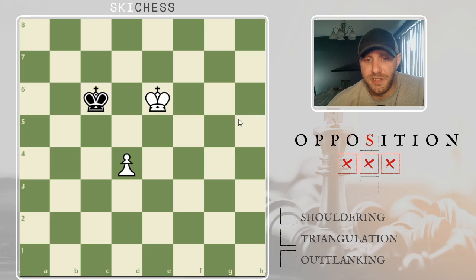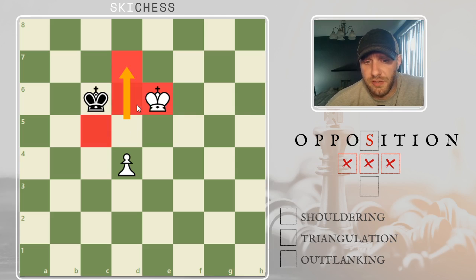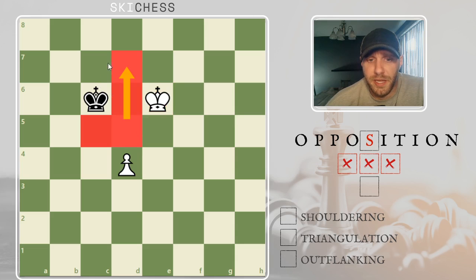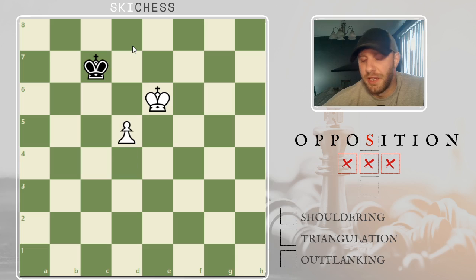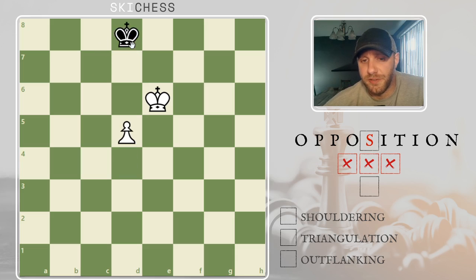White chooses to advance the pawn because he doesn't have anything to worry about. Black can't come here because of the pawn, and all of these squares are covered by the king. So black's only hope is to cover the queening square. Let's see if black's able to do it. Black backs up, we advance the pawn, and you think, oh no, we gave up the queening square — but white takes the opposition.